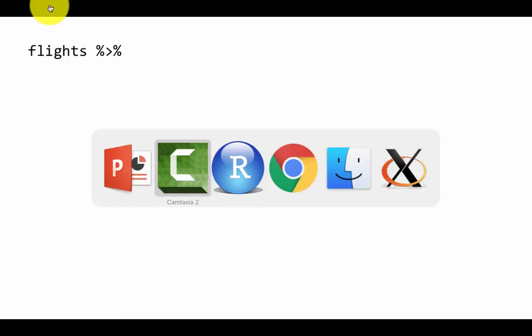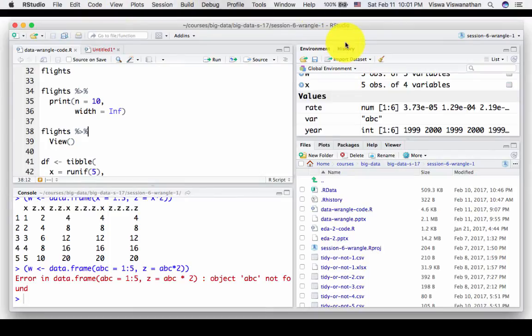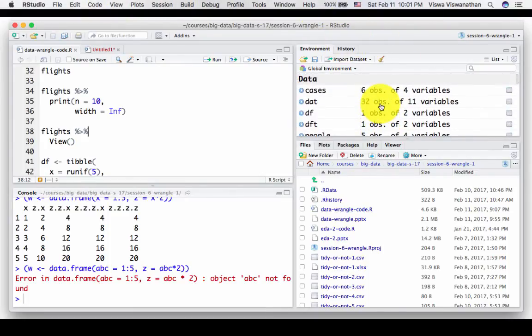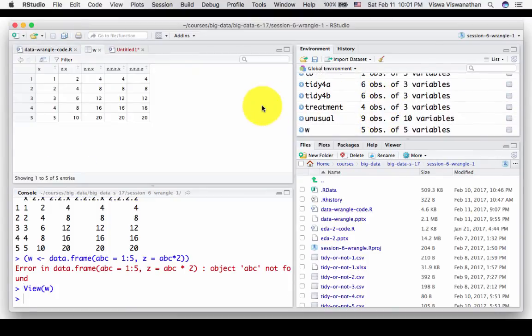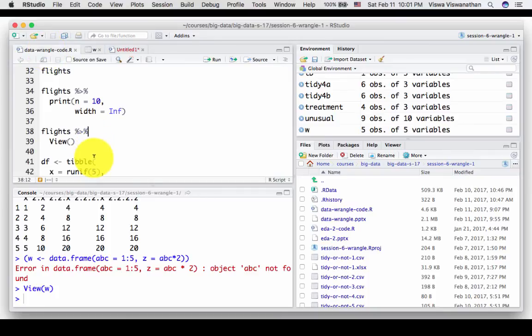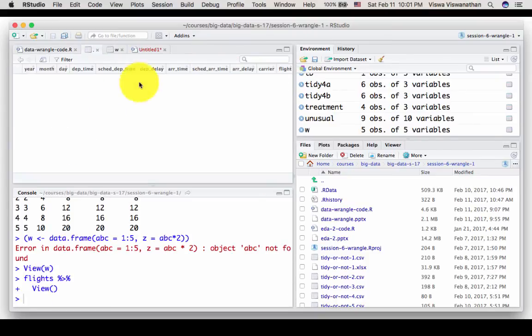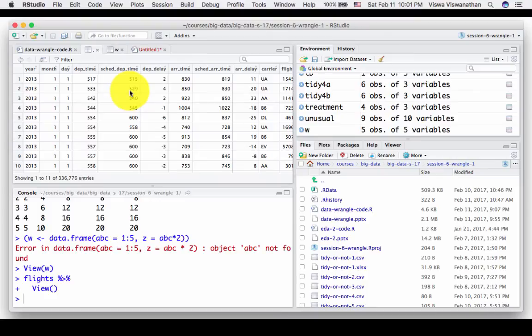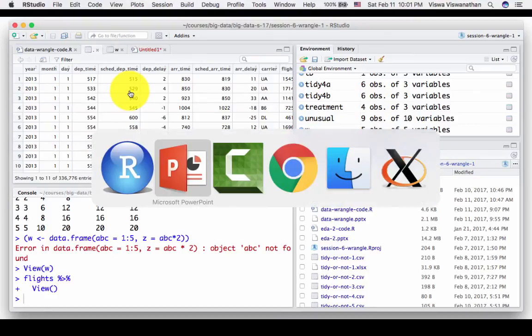One thing you might have noticed is when we use tibbles like flights, which are part of packages, not something we loaded explicitly through reading a file, those kinds of things do not display in the environment. If I look in this R environment, I'm not going to see flights displayed anywhere here. If you want to take a look at this data, you could just execute the command view. So if I did flights view, then it shows up right here. It took a little time because of the size of the tibble. You could do flights view and you'll be able to view the contents of that tibble.